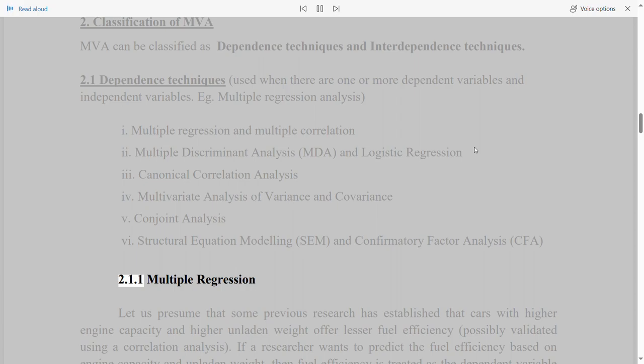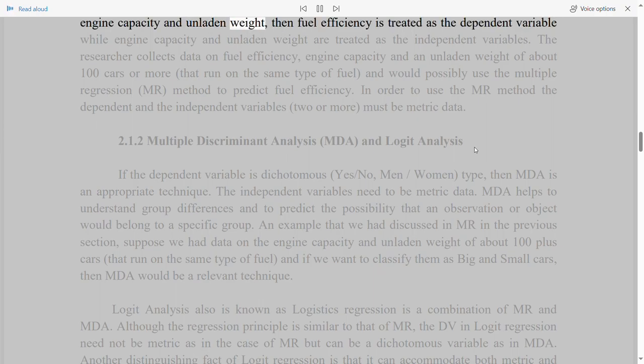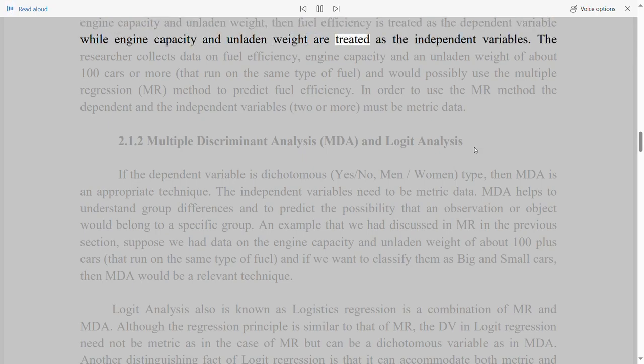2.1.1 Multiple regression. Let us presume that some previous research has established that cars with higher engine capacity and higher unladen weight offer lesser fuel efficiency, possibly validated using a correlation analysis. If a researcher wants to predict the fuel efficiency based on engine capacity and unladen weight, then fuel efficiency is treated as the dependent variable while engine capacity and unladen weight are treated as the independent variables. The researcher collects data on fuel efficiency, engine capacity and unladen weight of about 100 cars or more that run on the same type of fuel, and would possibly use the multiple regression method to predict fuel efficiency. In order to use the MR method, the dependent and the independent variables, two or more, must be metric data.